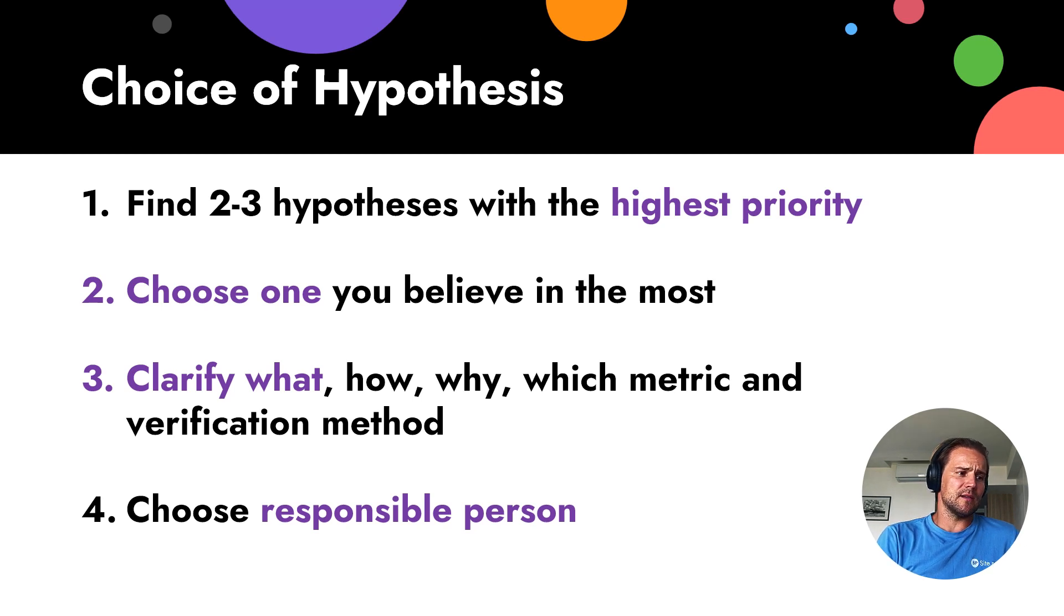Then you choose one that you believe mostly. For example, 3 hypotheses can have the same result, but you just know that one hypothesis really, you've waited for that. You've tried to test it for 2 years. Now, it's the right time. So, you choose it.